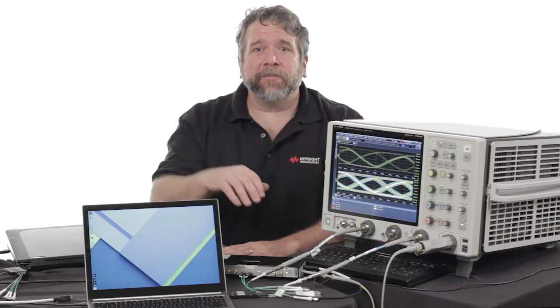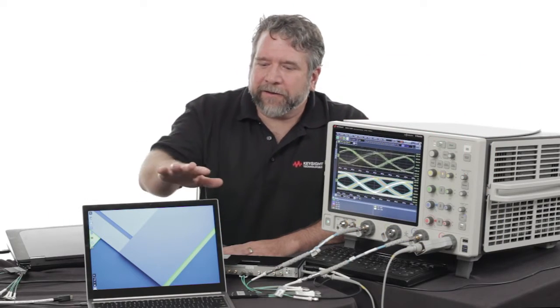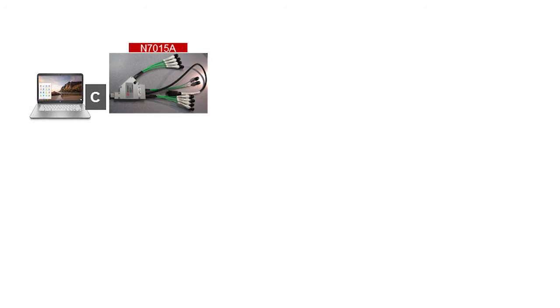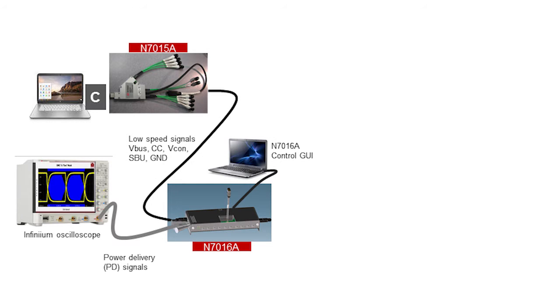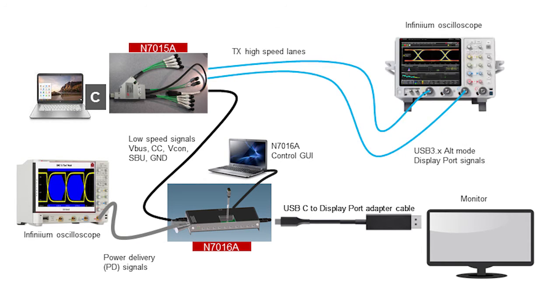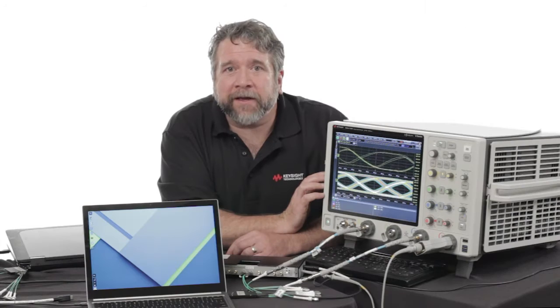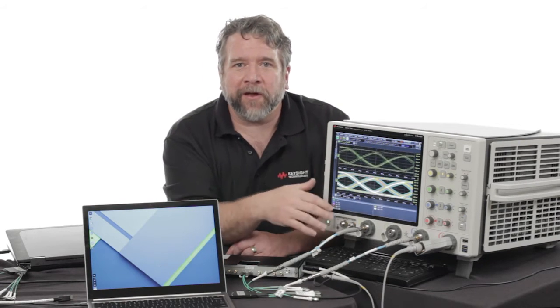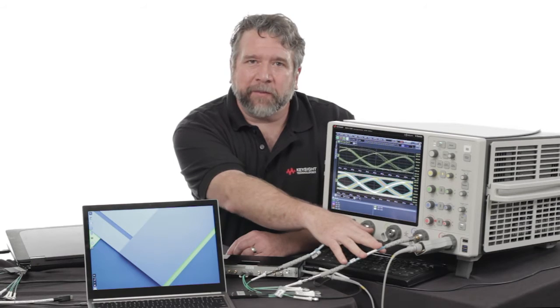The demo that I have set up today is showing data from the USB Type-C connection coming from the host, going through our high-speed fixture, going to our low-speed fixture, and then going off to the device — which is a monitor that we're connected to. We're also intercepting the high-speed data lines and those are going into the scope. On the scope we have displayed the signals coming directly from Channel 1 and Channel 3, set up as a differential pair.